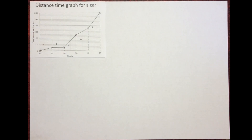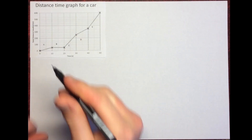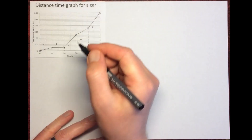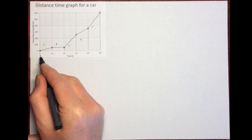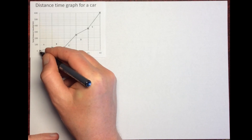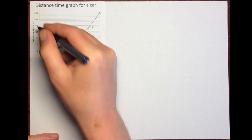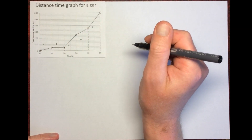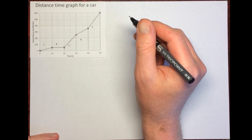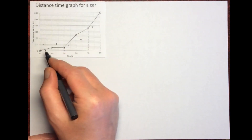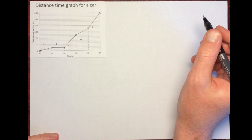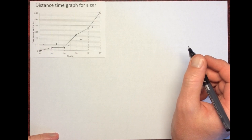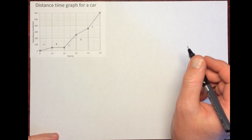This is about distance-time graphs. Distance-time graphs show us how distance traveled changes over a period of time. They are one of only two types of graphs in physics where we join the points dot-to-dot with a straight line — the other being velocity-time graphs.